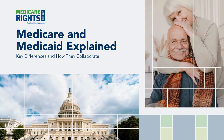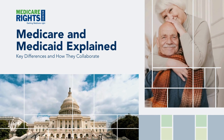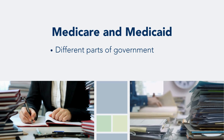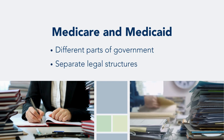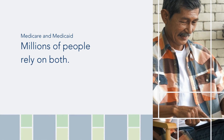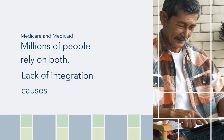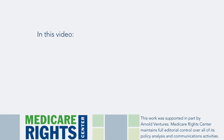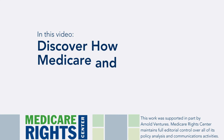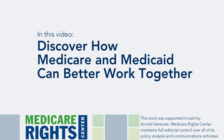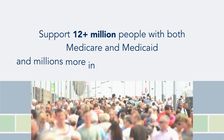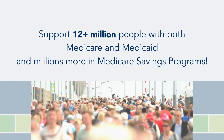Medicare and Medicaid are two essential but distinct health insurance systems in the United States. While these programs are run by different parts of our government and have separate legal structures, millions of people rely on both. Unfortunately, the lack of integration between them often causes challenges for these individuals. In this video brought to you by the Medicare Rights Center, you will discover how Medicare and Medicaid can better work together to support more than 12 million people enrolled in both programs, as well as the millions more in Medicare savings programs.